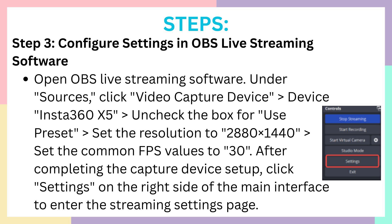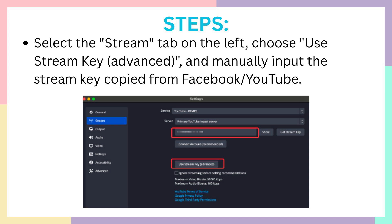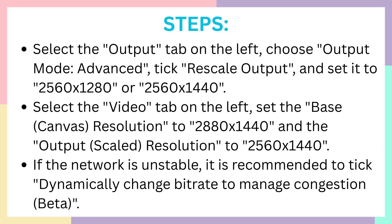After completing all this, click on the right-click settings and you will be good to go. Then select the Stream tab on the left — as you can see in the screenshot. Choose Use Stream Key in Advanced, and manually input the stream key copied from Facebook or YouTube. After that, select the Output tab on the left side and click Choose Output Mode. In Advanced, tick Rescale Output.